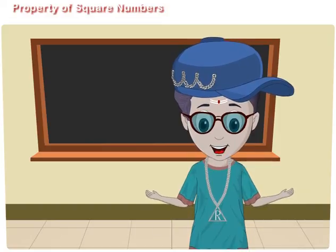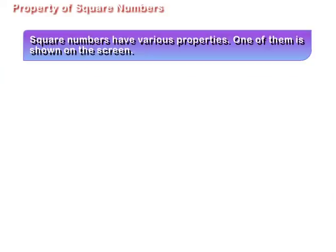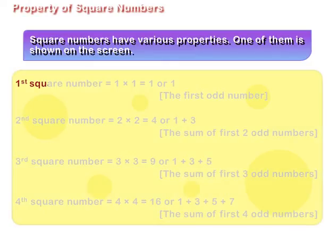An important property of square numbers: square numbers have various properties, one of them is shown on the screen. First square number is equal to 1 multiplied by 1, which is equal to 1, or 1, the first odd number.